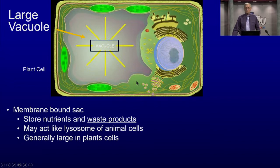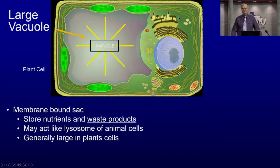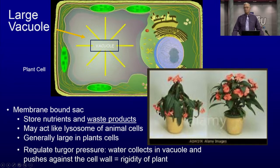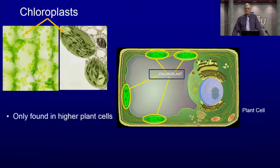Plants also have a very large vacuole that stores nutrients and waste. If a cell is exposed to toxic things, it dumps them into the vacuole to help detoxify the rest of the cell. It may act as a lysosome. The vacuole also has to do with whether plants are upright — if the vacuole is filled with fluid, the plant is hydrated and rigid; if not, it droops. The pressure and amount of water in the vacuole dictates whether the plant stands upright.